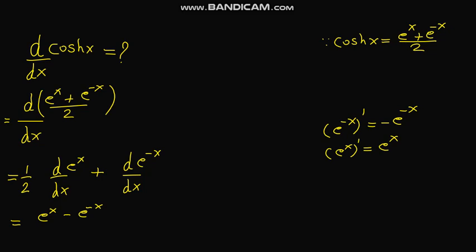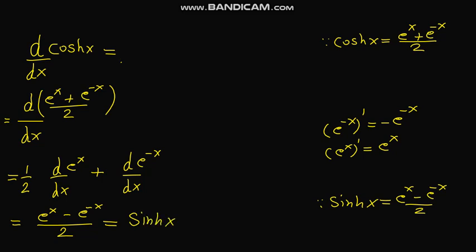We know that hyperbolic sin x equals e to the power x minus e to the power negative x, upon 2. So we can see that our result matches this definition. Therefore, the derivative of hyperbolic cos x is hyperbolic sin x, and this is our final answer.